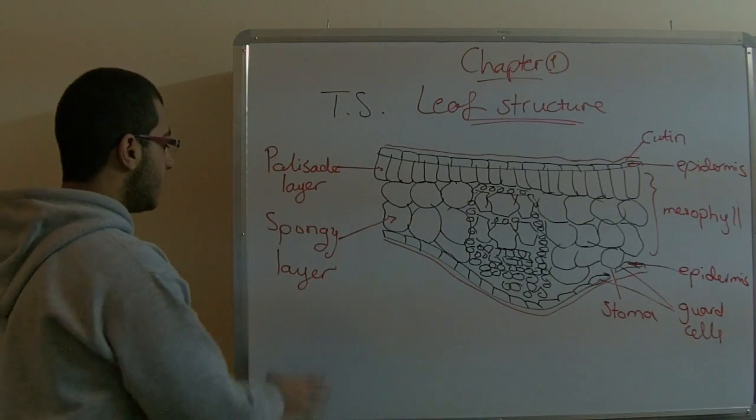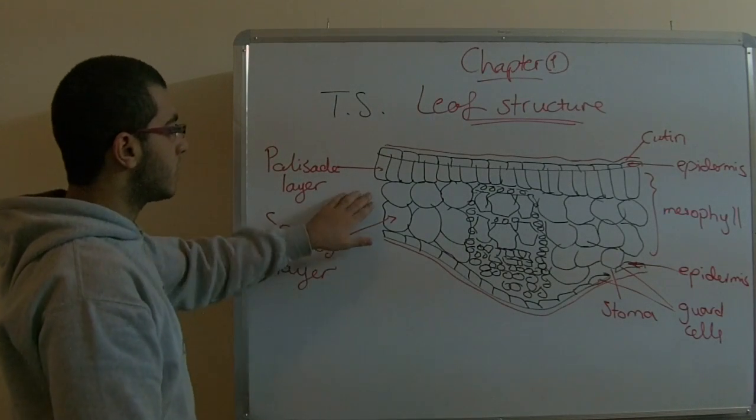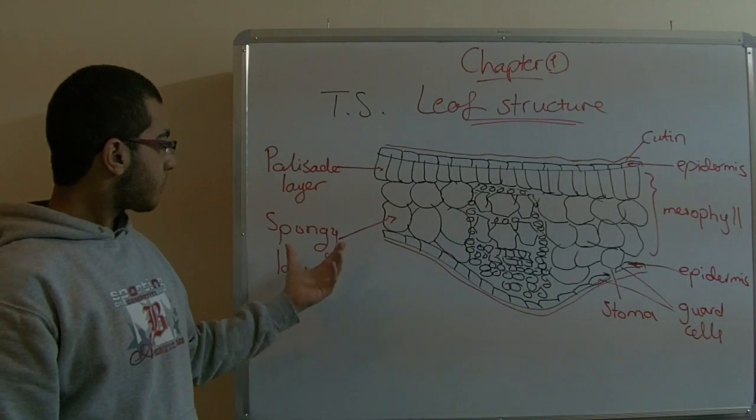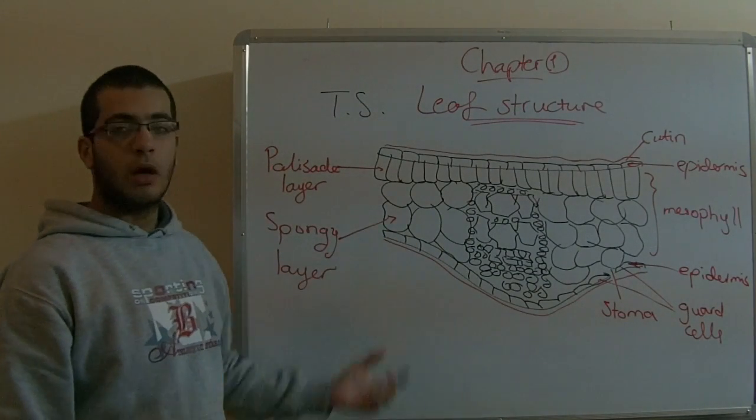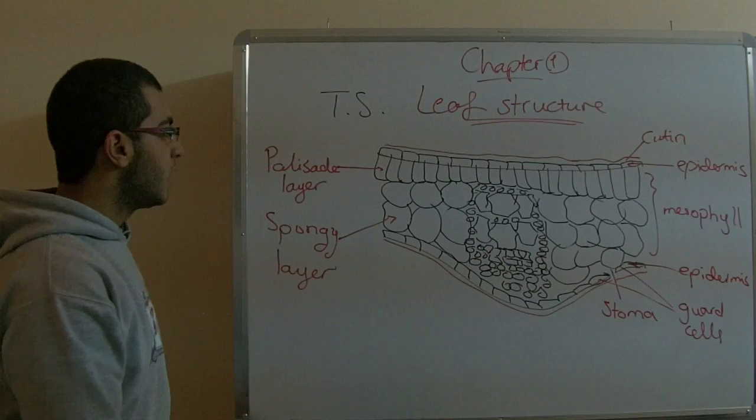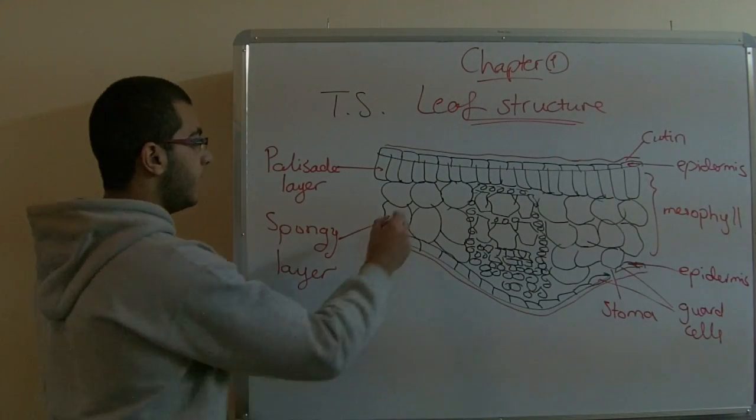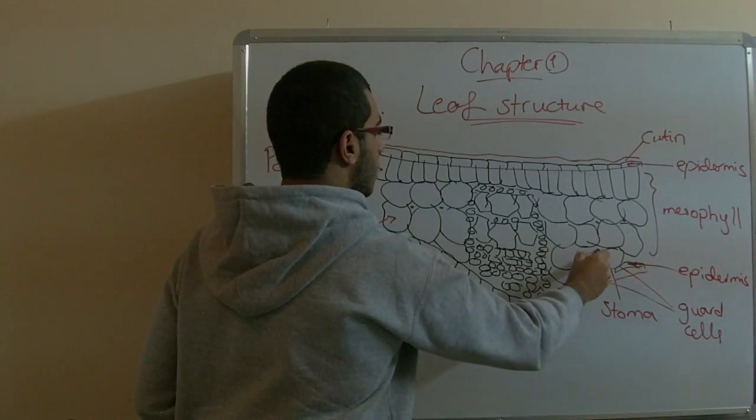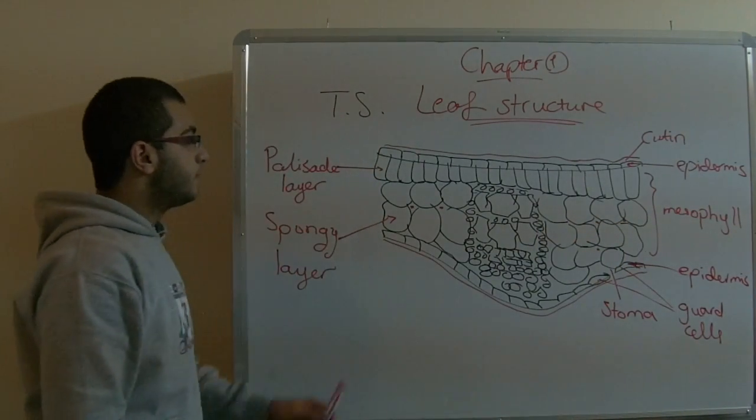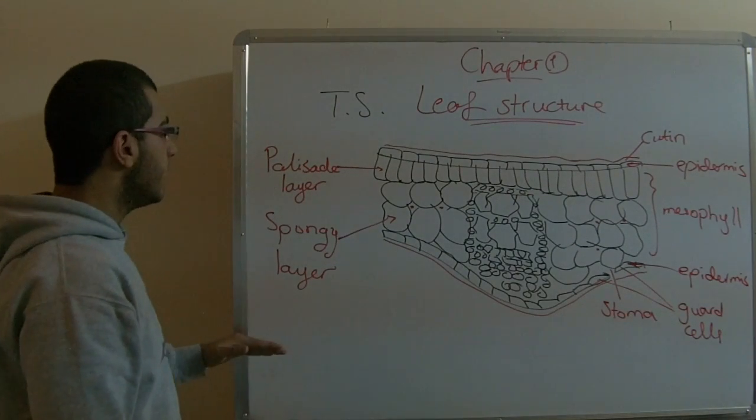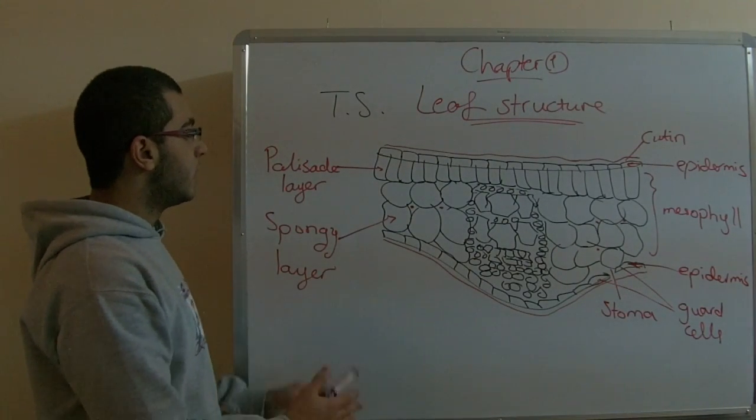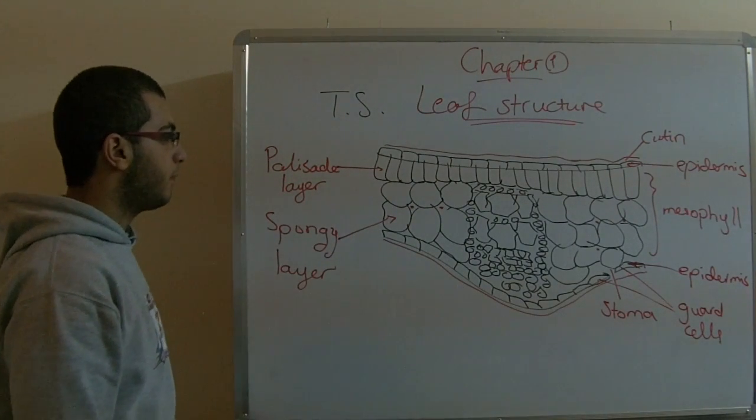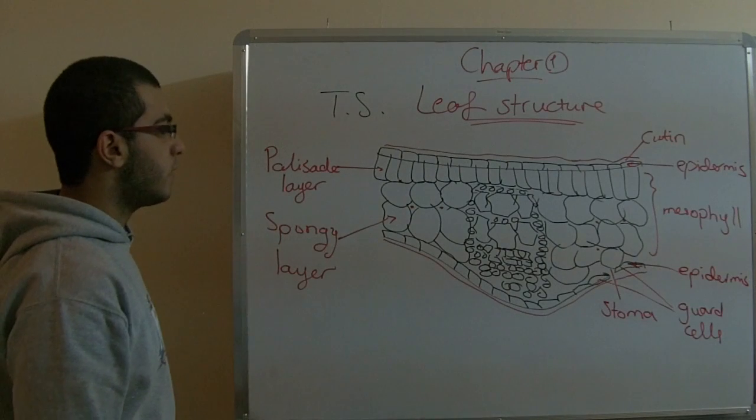The second layer is the spongy layer. It lies below the palisade layer. This layer consists of a group of spongy cells, they are irregular in shape with a lot of intercellular spaces like these, and they contain less amount of chlorophyll or chloroplasts than the palisade layer. This was our second point.